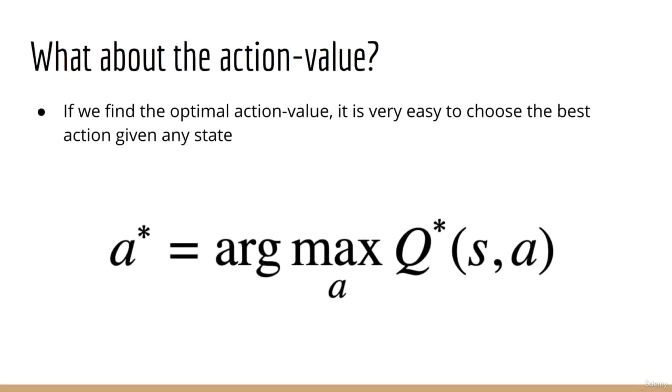The real value, no pun intended, of the action value function is this. Suppose we are playing some game, and we would like to know what's the best action to perform right now. Well, we have a dictionary telling us exactly what to do. All we have to do is find the argmax over q given a state s. In other words, the best action to perform becomes a simple dictionary lookup.